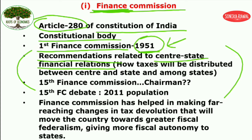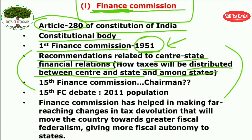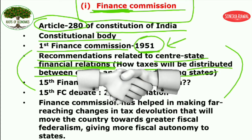The Finance Commission gives recommendations related to center-state financial relations. Government collects taxes, and then a criteria must be followed on how to distribute that tax between the center and the states. So recommendations are given through the Finance Commission regarding how taxes should be distributed between center and state, and also amongst the states, to avoid any conflicts.